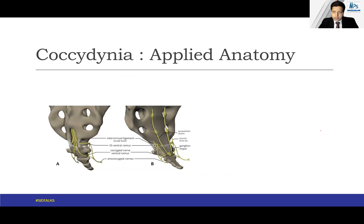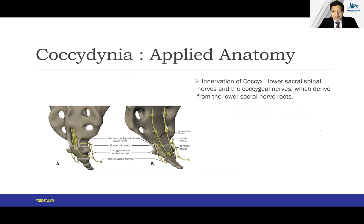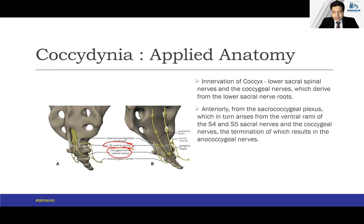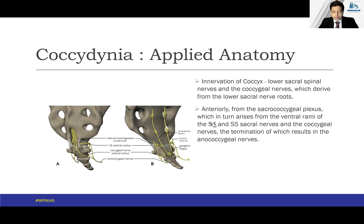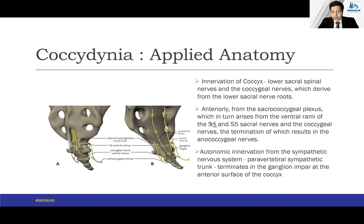Moving on to the nerves around the coccyx, the lower sacral spinal nerves as well as the coccygeal nerves come and innervate this region. Anteriorly, from the sacrococcygeal plexus, the nerve supply arises from the ventral rami of the S4 and S5 sacral nerves and the coccygeal nerves, the termination of which results in the anococcygeal nerves. The autonomic nervous system fibers are from the sympathetic nervous system — the paravertebral sympathetic trunk — which, as mentioned, terminates in the ganglion impar.